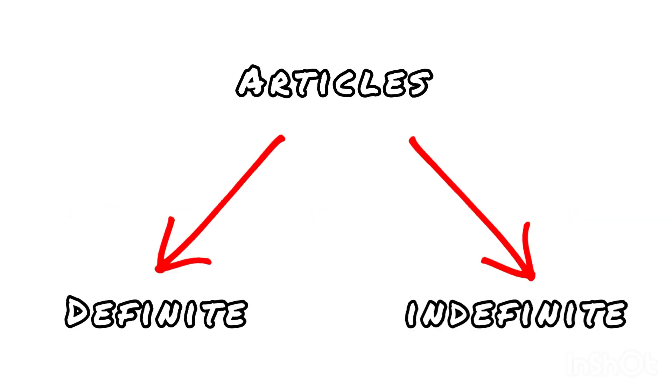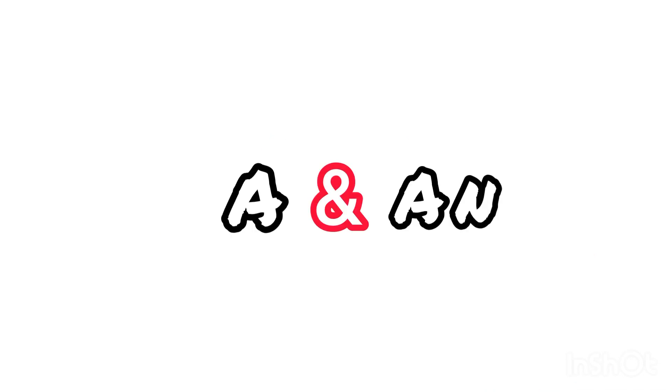The articles in English are the definite article, which is the, and the indefinite articles, which are a and an.